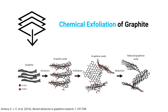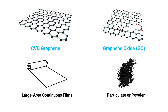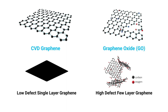CVD graphene exists as large area continuous two-dimensional thin films or sheets, whereas graphene oxide exists as a particulate or powder which is three-dimensional. CVD graphene is hydrophobic and not dispersable in liquids, while graphene oxide is hydrophilic and can be dispersed in liquids. CVD graphene is generally low defect single layer graphene, whereas graphene oxide is generally high defect few layer graphene due to the presence of oxygen functional groups. CVD graphene is available in both monolayer and multilayer configurations with precise layer control, whereas graphene oxide is almost always restricted to a multilayer configuration with very difficult layer control.